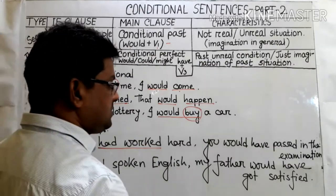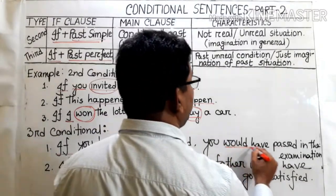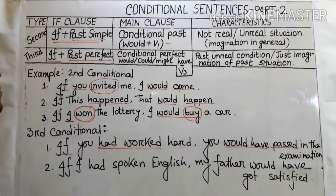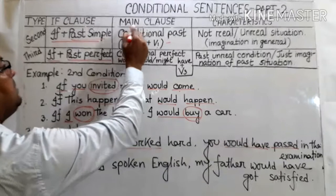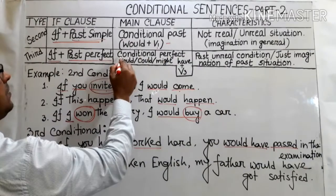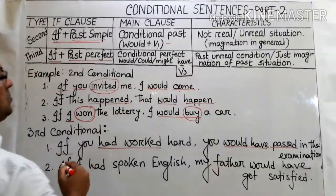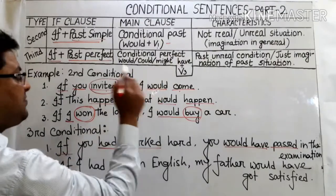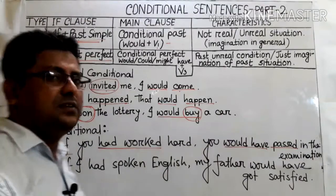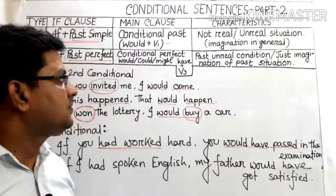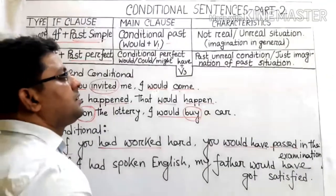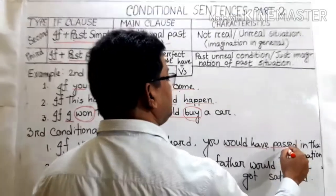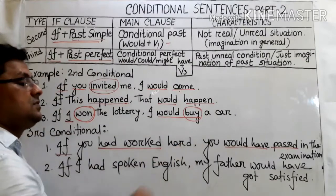In the main clause I have used 'would have' plus verb 3. From the table, in the main clause of the third conditional, the conditional perfect is used — that means 'would have,' 'could have,' or 'might have,' followed by verb 3. So this is the example of the third conditional.